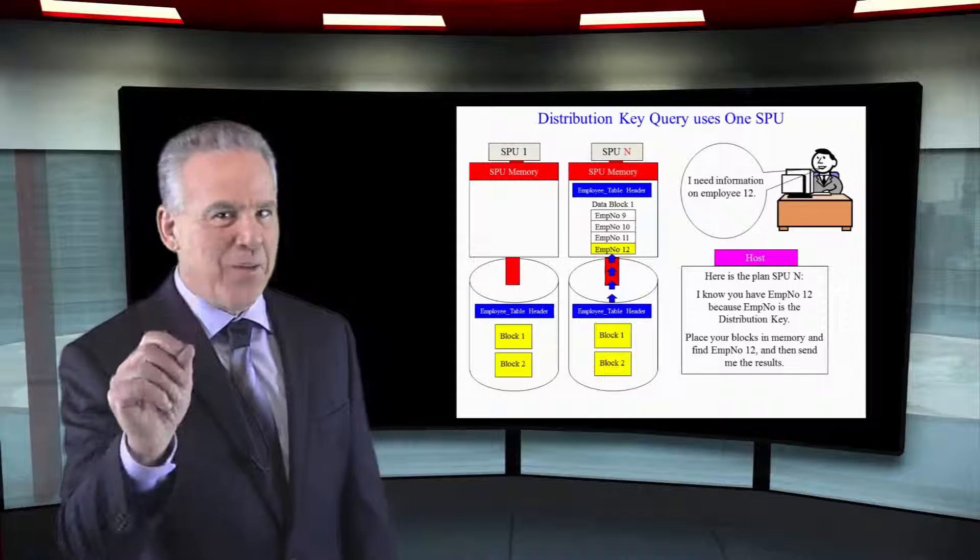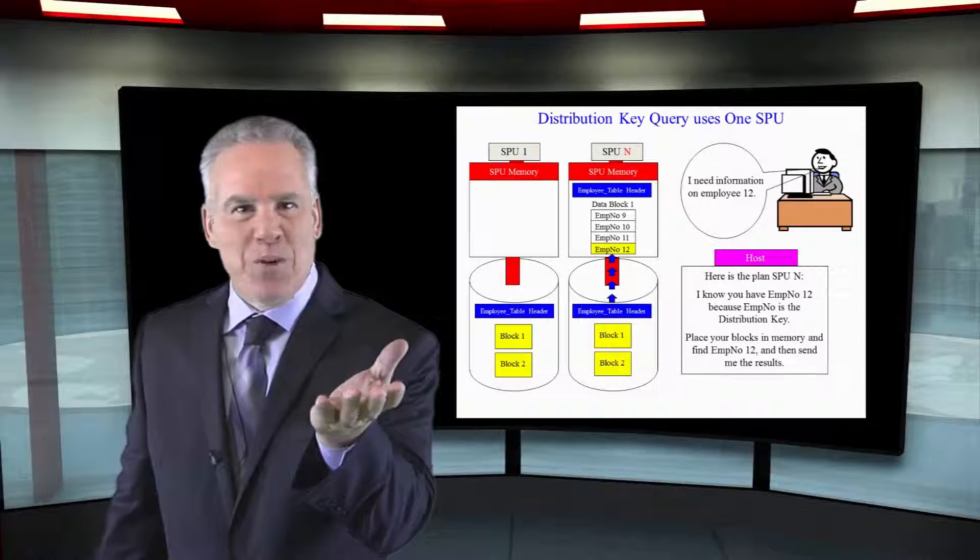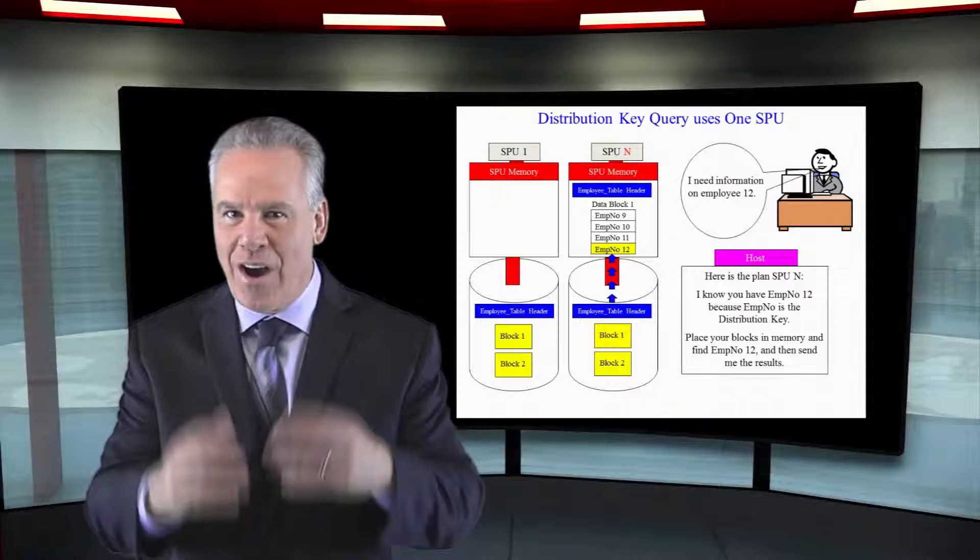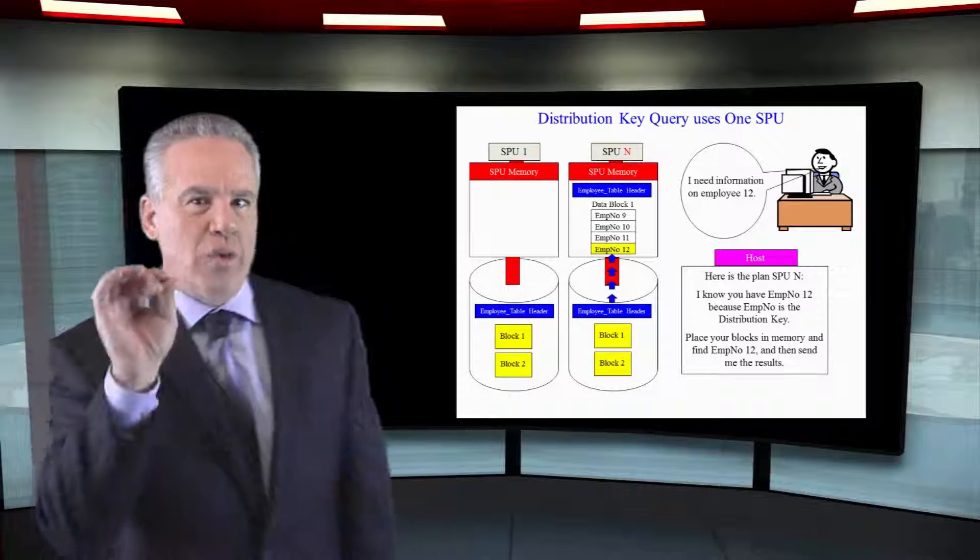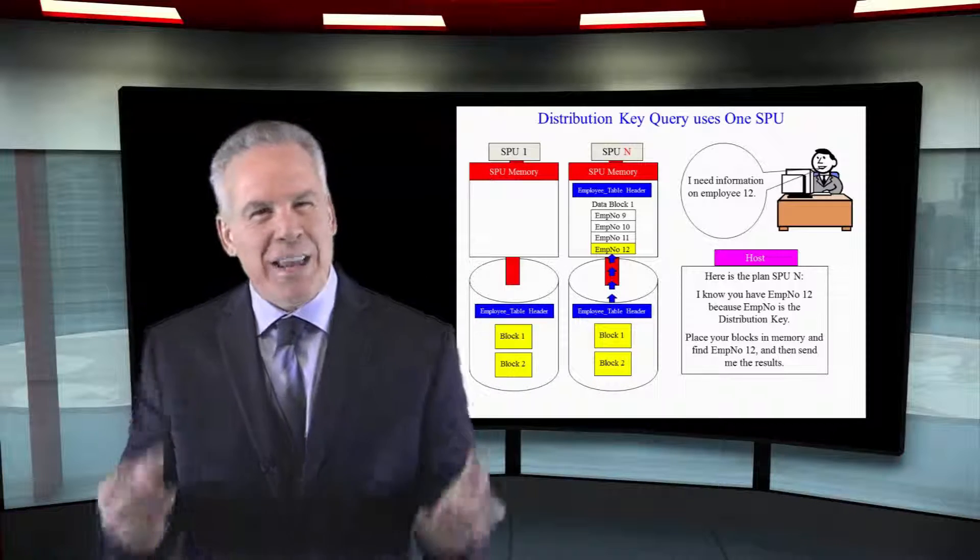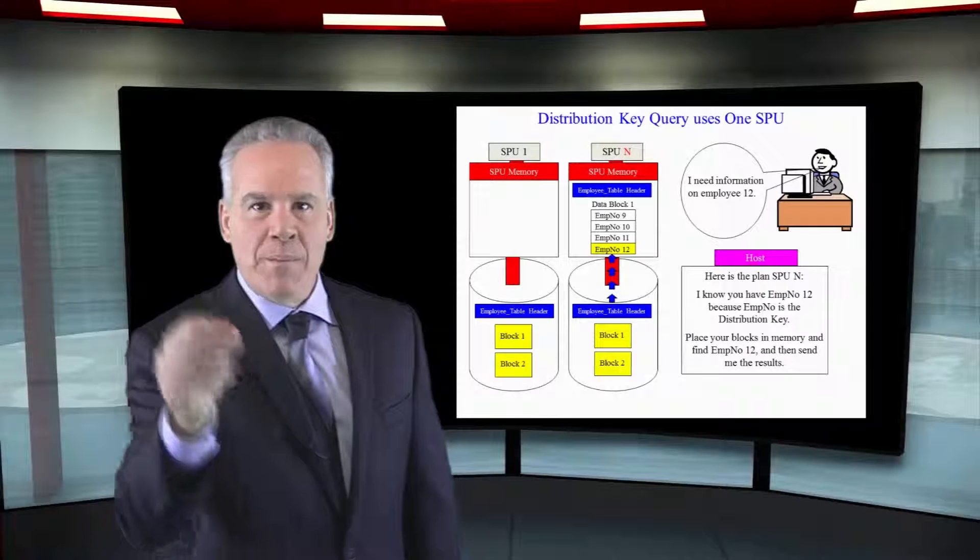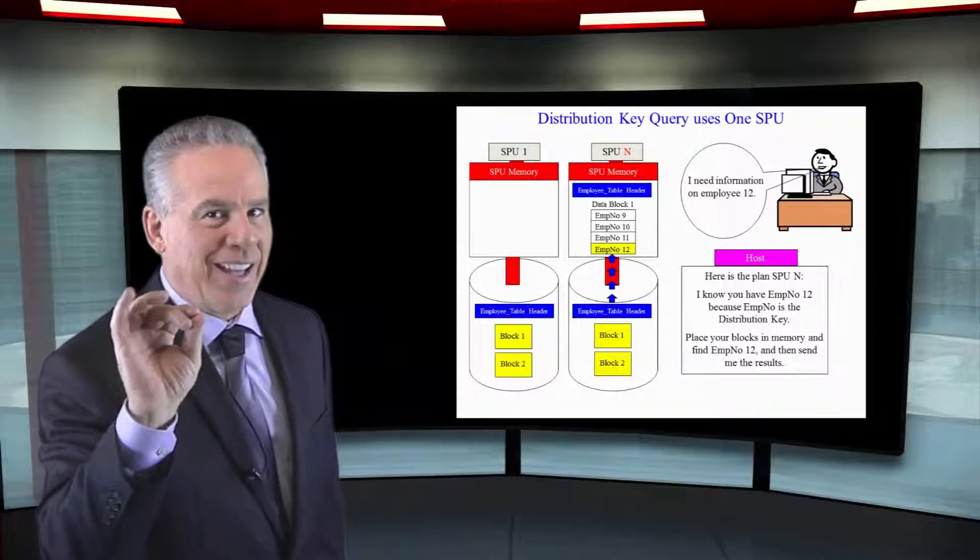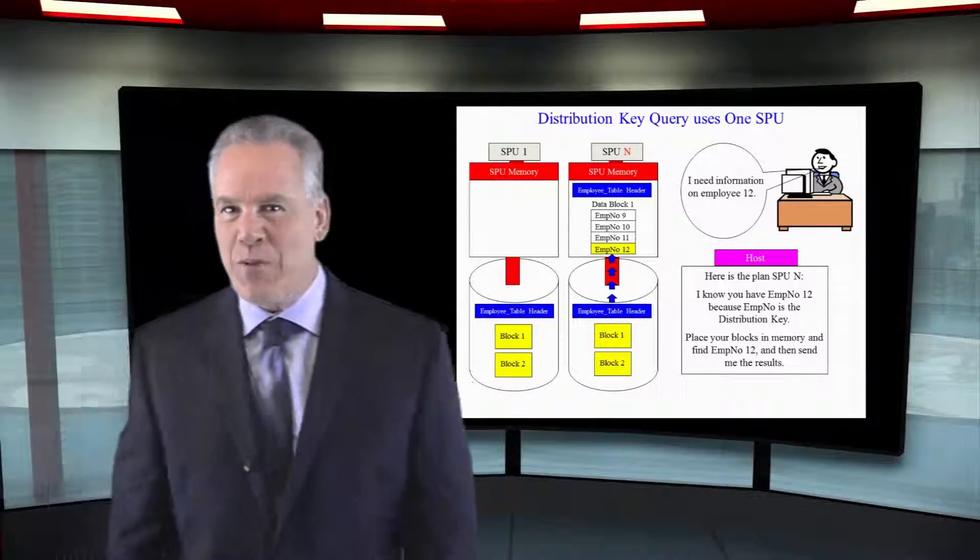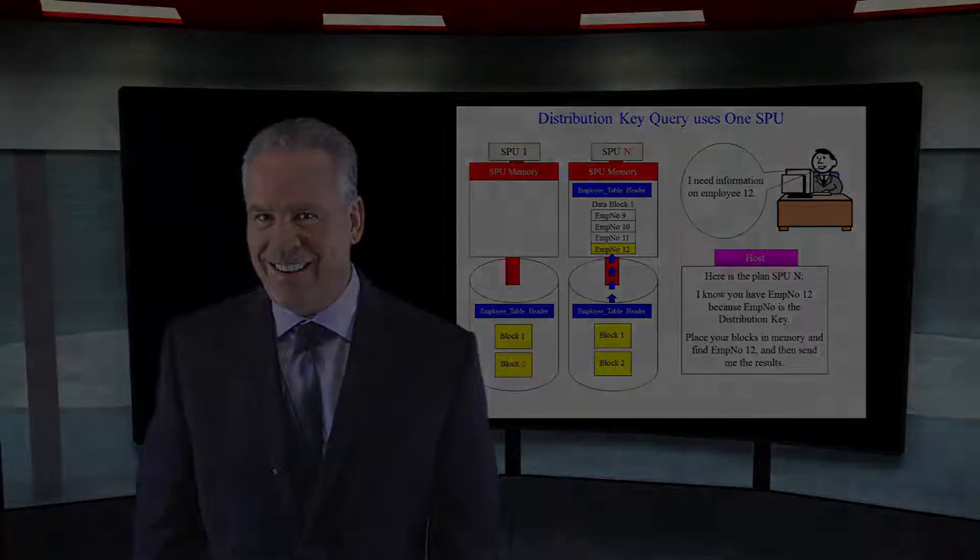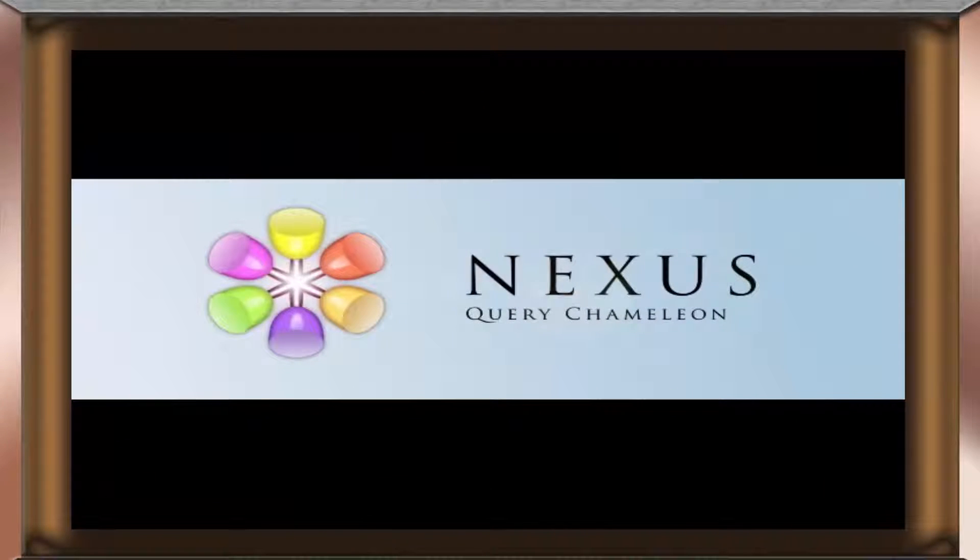Now, instead of the full table scan, we've used the distribution key in our where clause, and as you can see, only one SPU is contacted. It's like laying breadcrumbs down. If we hashed the distribution key to put it on a SPU, when we have to retrieve it or go back, we just follow the breadcrumbs, because we do the hashing again, and we know which SPU that's on.